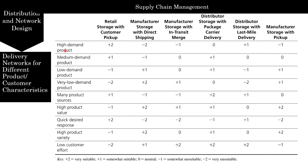For a high demand product, retail storage with customer pickup and distributed storage with last mile delivery are most suitable. For a medium demand product, you can see how there is a change in which network is most suitable.